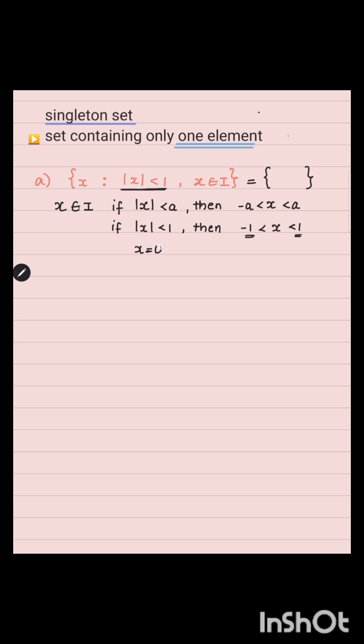Between minus one and one, the only integer we have is zero. So x equals zero is the only integer between minus one and one. This gives us the set containing the single element zero — we have found the singleton set already. But let us work out the other options to learn something new.